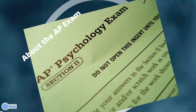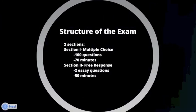In this video we're going to talk about the structure of the AP Psychology exam. In the AP exam, there are two sections: Section one, which is the multiple choice section, and section two, which is a free response section. In the first section, there will be 100 questions and you will have 70 minutes to answer those 100 questions. For section two, you will be required to answer two essay questions and you will have 50 minutes to write both of them.